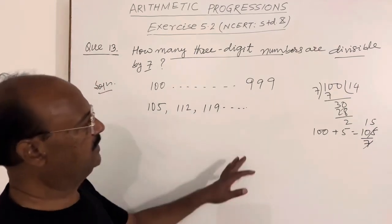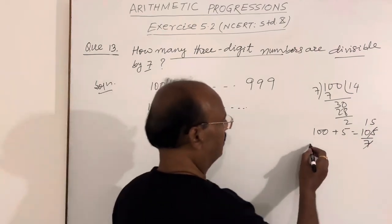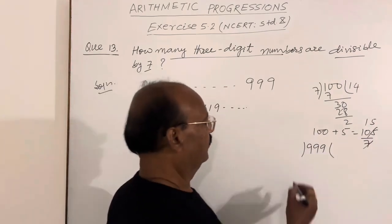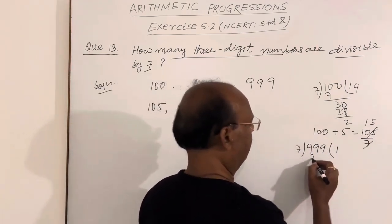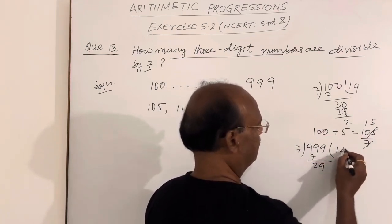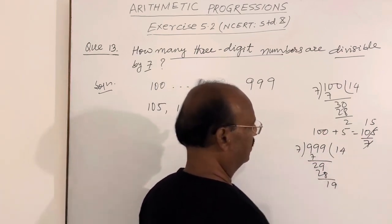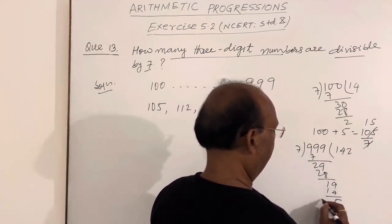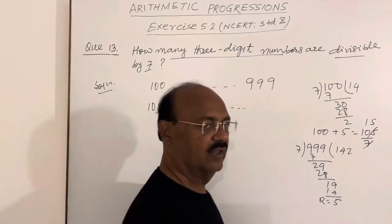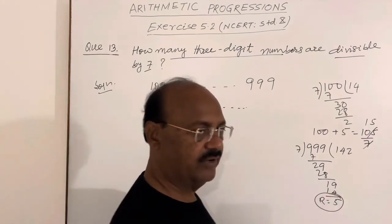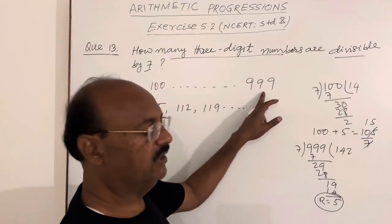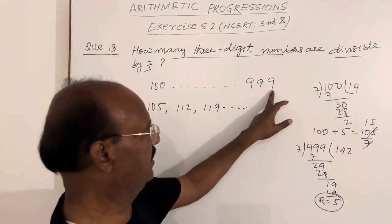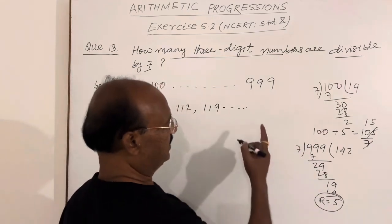What will be the last number? Let us see whether 999 is divisible by 7 or not. 7 times 1 is 7, 29, 7 times 4 is 28, 1, 19, 7 times 2 is 14, remainder is 5. So if you subtract this remainder 5 from this number, it will remain a three-digit number. So we can subtract 5 from 999, and the last three-digit number divisible by 7 would be 994.